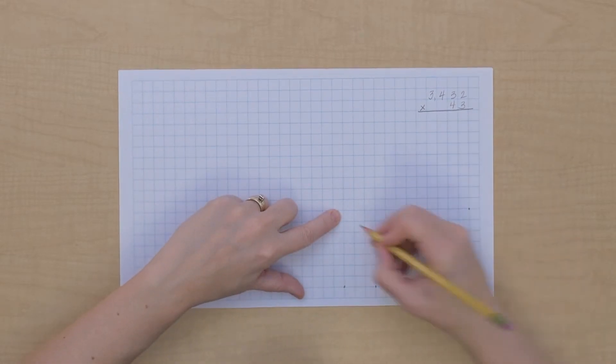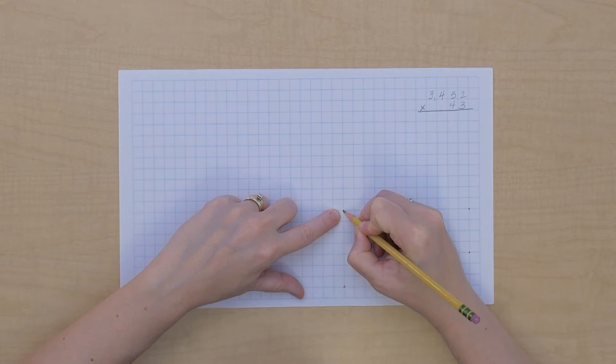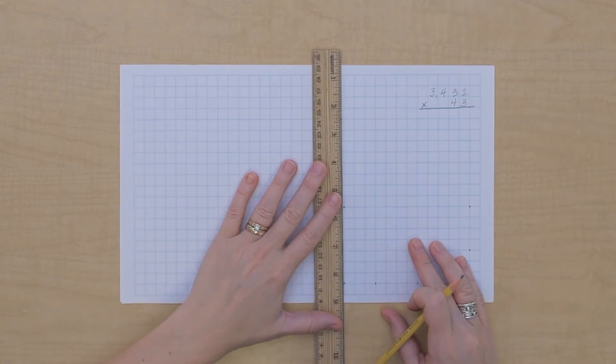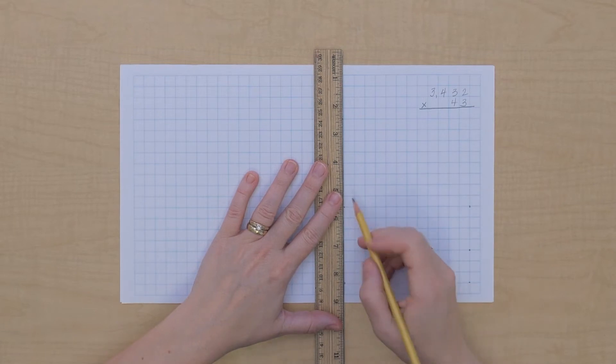And then I want to make a rectangle out of this, so I'll put a dot here so that I can draw a clear rectangle.